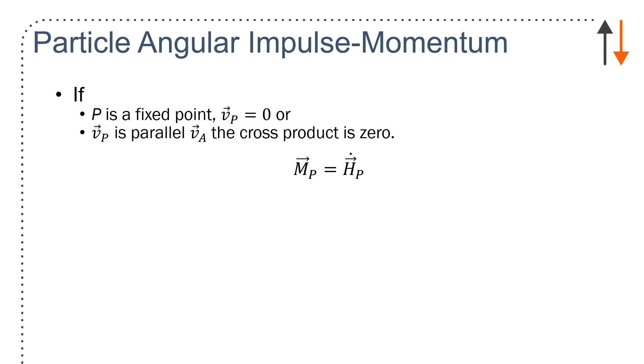If p is a fixed point, velocity of p is equal to zero. Velocity of p is parallel to v sub a, the cross product is zero. And m_p is equal to the time rate of change of angular momentum.